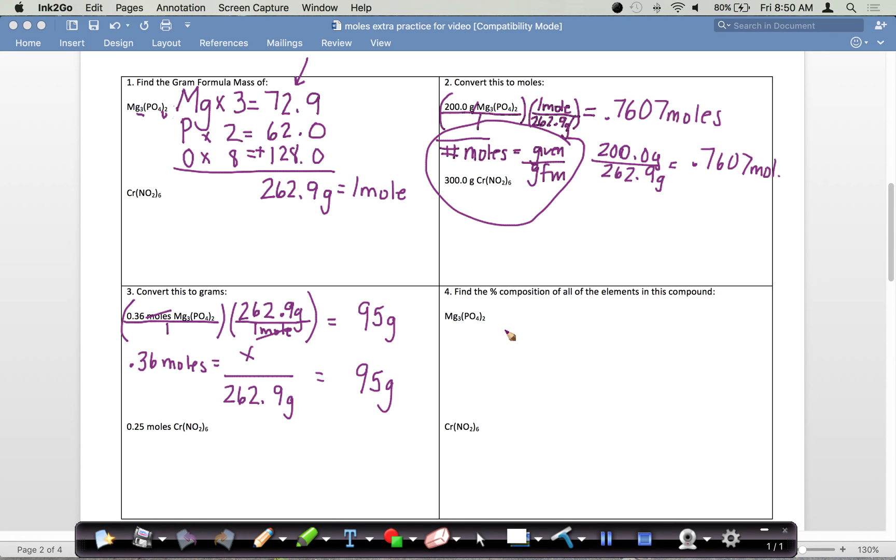If we want to find the percent composition, remember we're going to use the formula: mass of part over mass of whole times 100 equals our percent. For magnesium phosphate, to get the percent of magnesium, we put this mass for magnesium, which was 72.9, over the total mass, which was 262.9, times 100, and that came out to 27.7 percent.